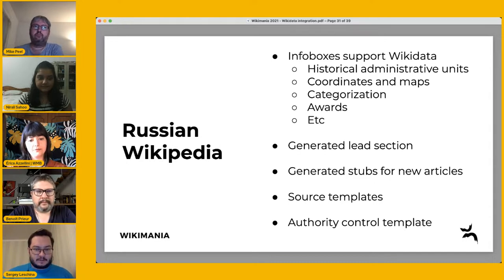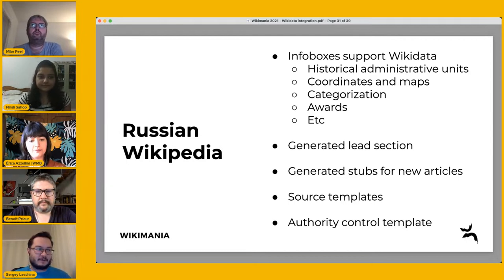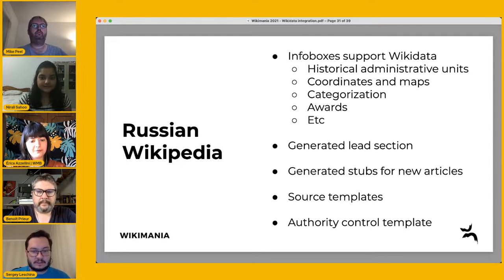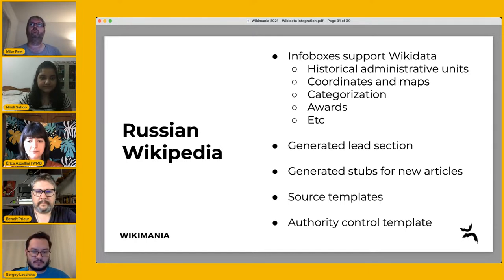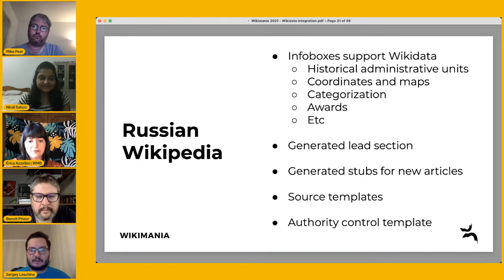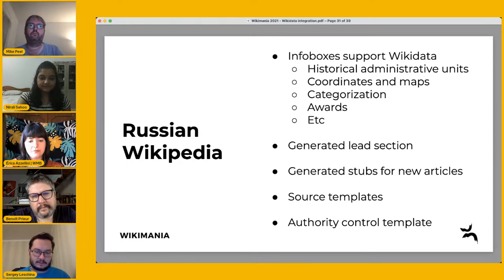We also tried to generate lead sections, similar to Mbabel, but it's only experimental. Some parts of lead sections — places and dates — we do widely use generated code for. We also use auto-generated stubs with an infobox, main parts, and a short lead section. We have source templates that are a little different from what English and French Wikipedia have, plus authority control and external links templates.